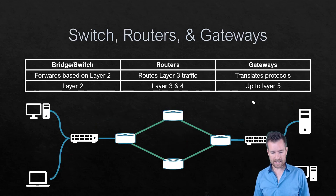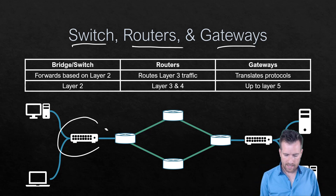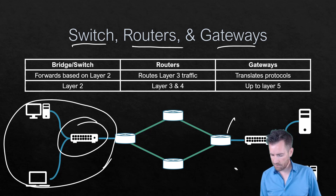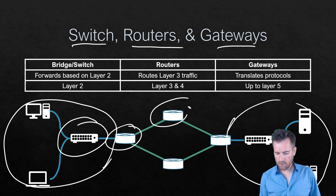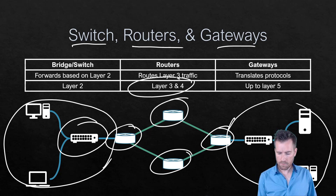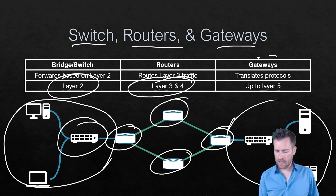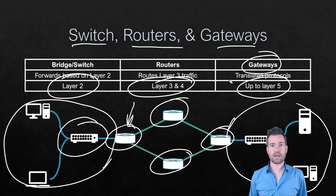In summary: switches handle local areas at layer two, dividing the network so local communication can happen. Routers forward packets from a layer three perspective. Gateways — many times your router functions as a gateway — translate different protocols from one to another, which can happen up to layer five.